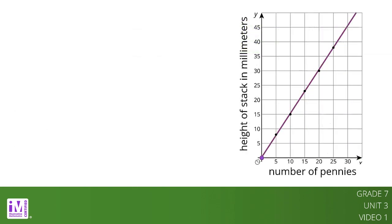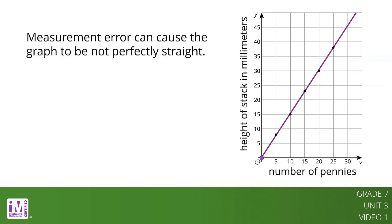In summary, it can be difficult to measure the quantities in a proportional relationship accurately. Sometimes, measurement error can cause the graph to be not perfectly straight and the quotients to be not exactly constant.